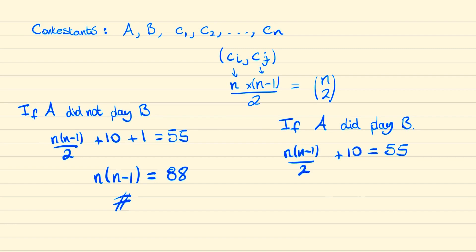And solving this, we show that n times n minus one is equal to 90, and it's not too difficult to spot here that n equals 10. Since this is an integer, we know for certain that A must have played B, and in particular there are 12 contestants in total. And so we're done.